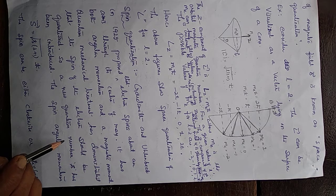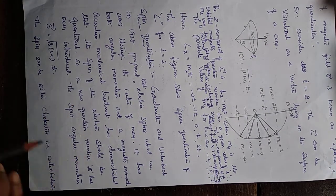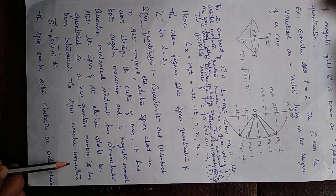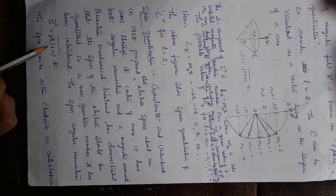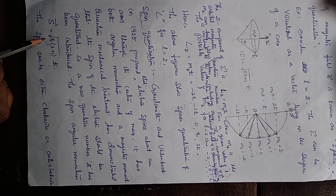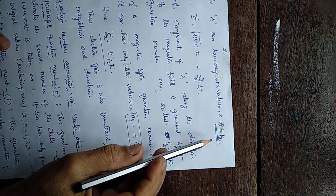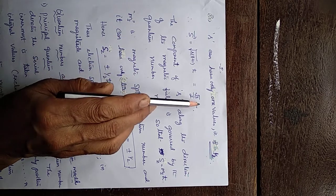There is magnetic moment due to spinning motion. According to quantum mechanics, the spin angular momentum of the spinning electron is given by S vector equal to the square root of S(S+1) times h-bar, where S is the spin quantum number. S can have only one value. The spin orientation of the electron may be clockwise or anticlockwise — two possible orientations. The value of S is one-half.